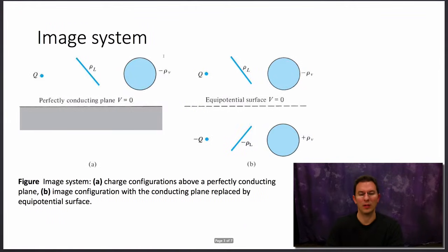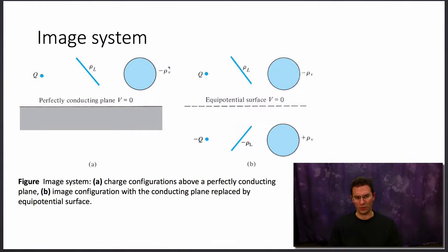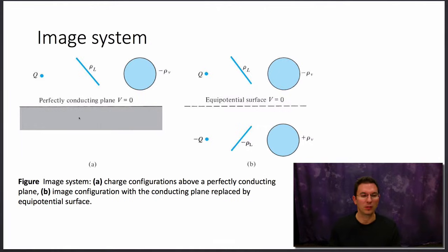Let me unpack that a little bit. This figure shows a number of different charge distributions: a point charge Q, a line charge with linear charge density, and a negatively charged volume. Down here we have a perfect electrical conductor. Below this line we have a perfect conductor.